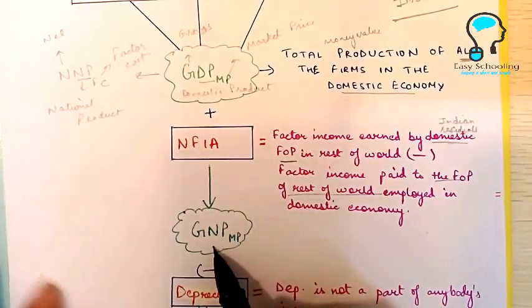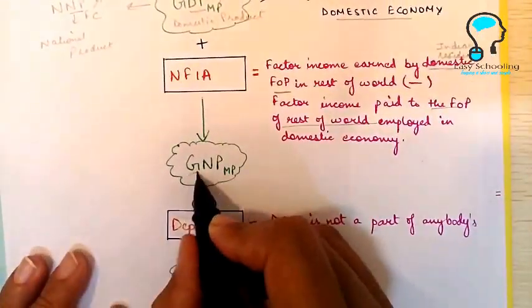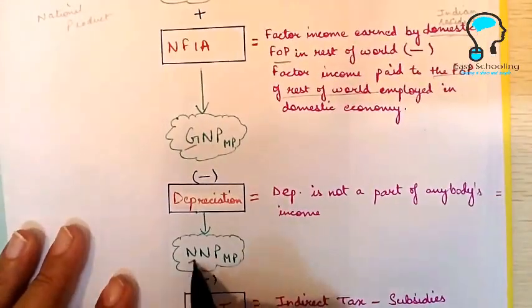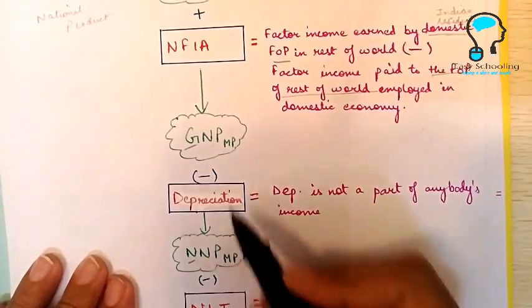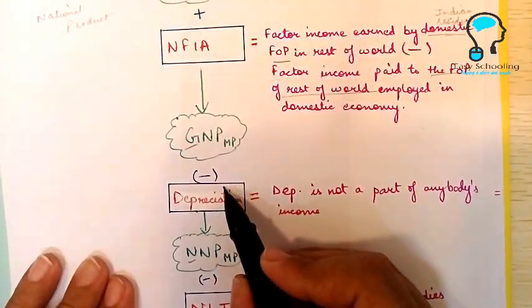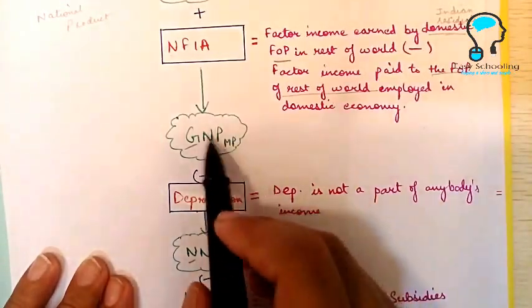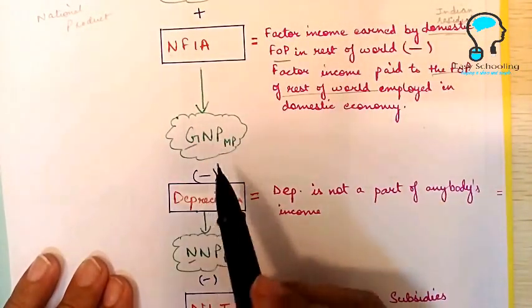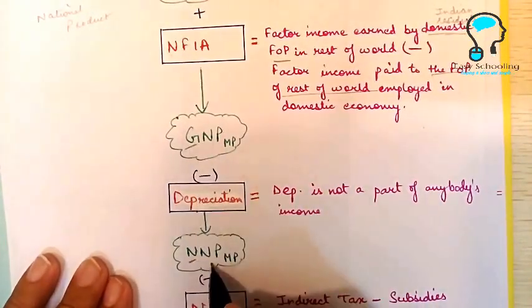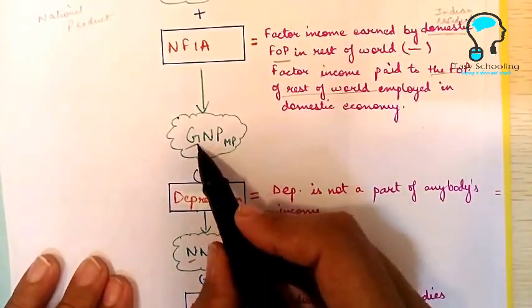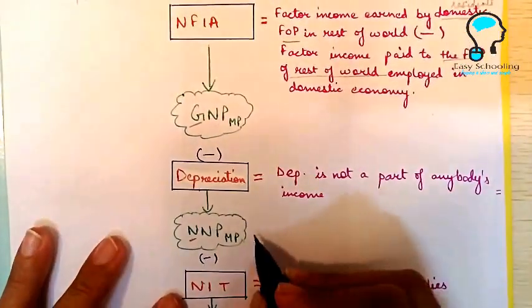When you add net factor income from abroad to the domestic product, that is going to give you national product. We have changed DP to NP. Now what we are going to do is we are going to change this G to N. Whenever we have to change from gross to net, we have to subtract depreciation. Why? Because depreciation is not a part of anybody's income but GDP includes depreciation. So if you subtract depreciation from GNP it will give you NNP. Now we have also changed G to N.